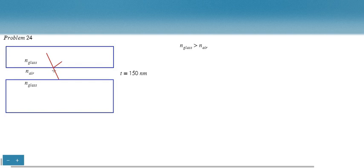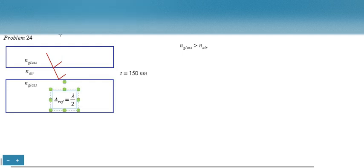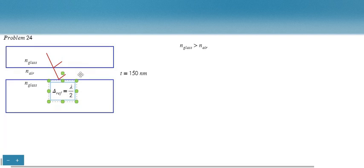However, for the transmitted portion of the light — now it's in air, going through air — it strikes the glass. Since it's going from lower to higher refractive index, this reflected portion does experience a phase shift of 180 degrees. A phase shift of 180 degrees, we can write that as a path length difference delta_reflection equal to lambda over 2. A phase shift of 180 degrees is the same thing as shifting the wave by lambda over 2.